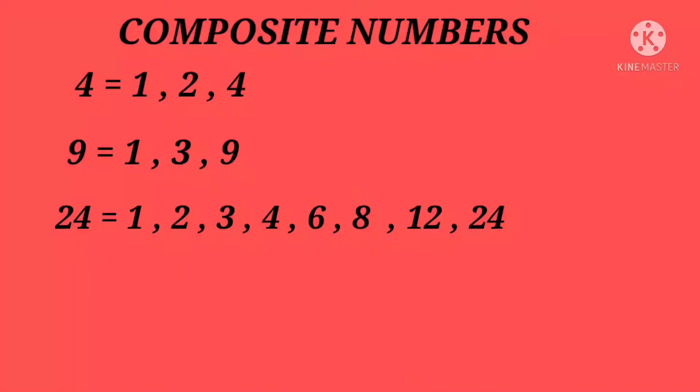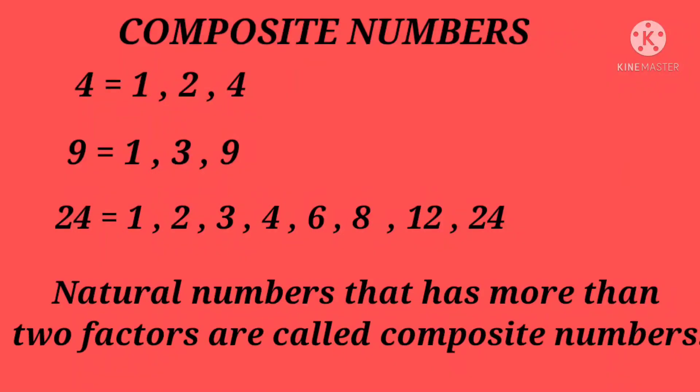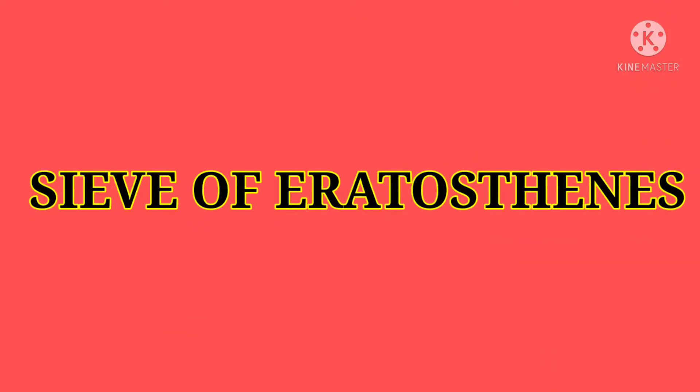Therefore, all these numbers have more than two factors. So, natural numbers that has more than two factors are called composite numbers.